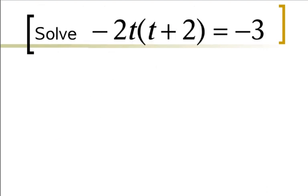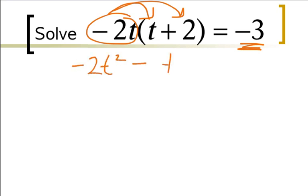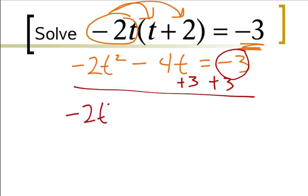Now we're going to have another example where we have to do a little work before the quadratic formula. I have to distribute my negative 2t into the parenthesis and move my negative 3 over to the left. This gives me negative 2t squared minus 4t equals negative 3, so I add 3, giving me negative 2t squared minus 4t plus 3 equals 0.